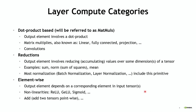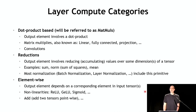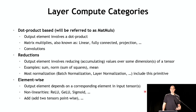The second category is reductions, where the output element computation involves reducing or summing up input elements over some tensor dimension. Operations include computing an average, the sum of all elements, or a norm. These come up in loss functions as well as normalizations such as batch normalization, layer normalization, and instance norm — which compute mean and standard deviation over some tensor dimension. These are less math-intensive than dot product computations; you have to look at a group of numbers and combine them.